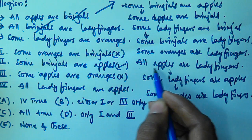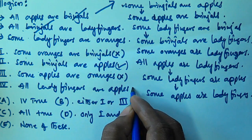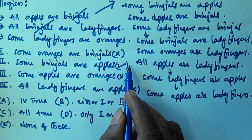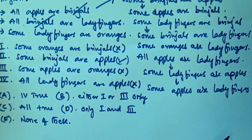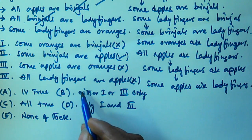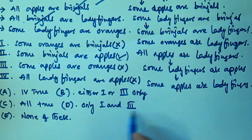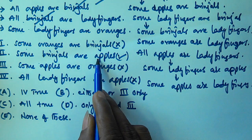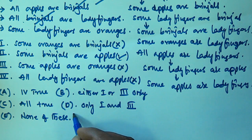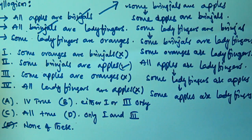Conclusion 4: All ladyfingers are apples — we only derived All apples are ladyfingers, not the reverse, so this is false. So only the second conclusion is true. Looking at all the options — only four is false, all true is false, only one and three is false — none of the options match. So we have to select option E: None of these. I hope you understood this. Thank you very much for watching this video, and please subscribe.